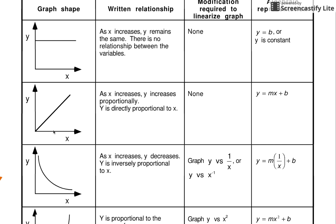What this means is as the x variable gets bigger, the y variable gets bigger proportionally. For example, in our pendulum lab, if we put mass as the independent variable on the x-axis, and the dependent variable — the period — on the y-axis, and if mass and period were in a directly proportional relationship, it would mean that if you doubled the mass, you'd end up doubling the period as well. That's what you find out when you actually do the experiment.